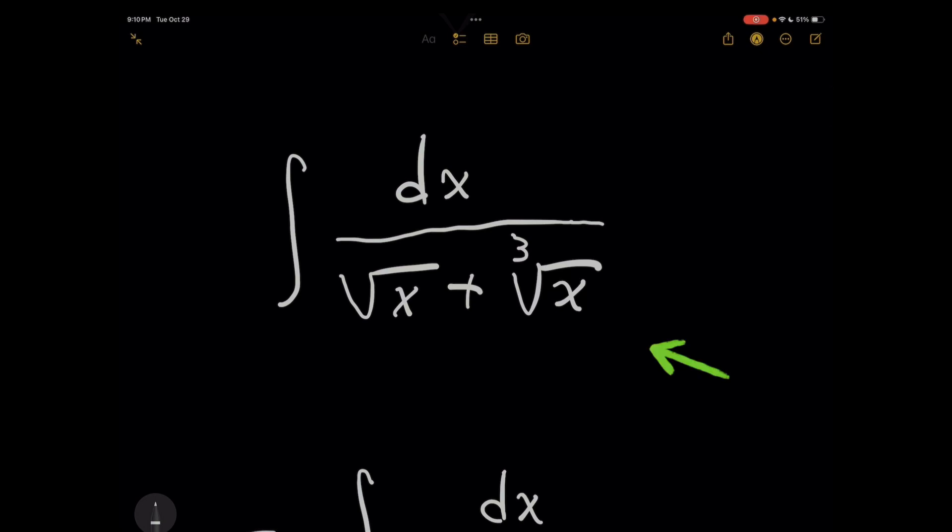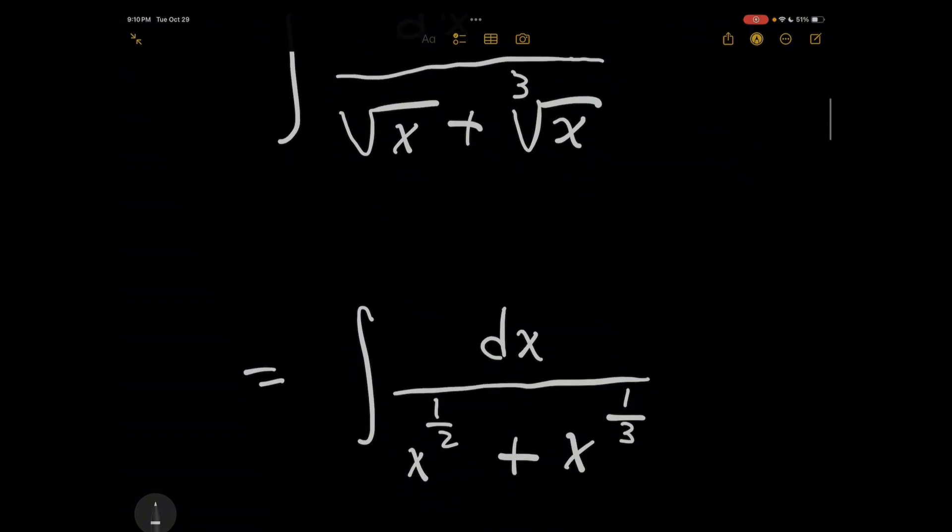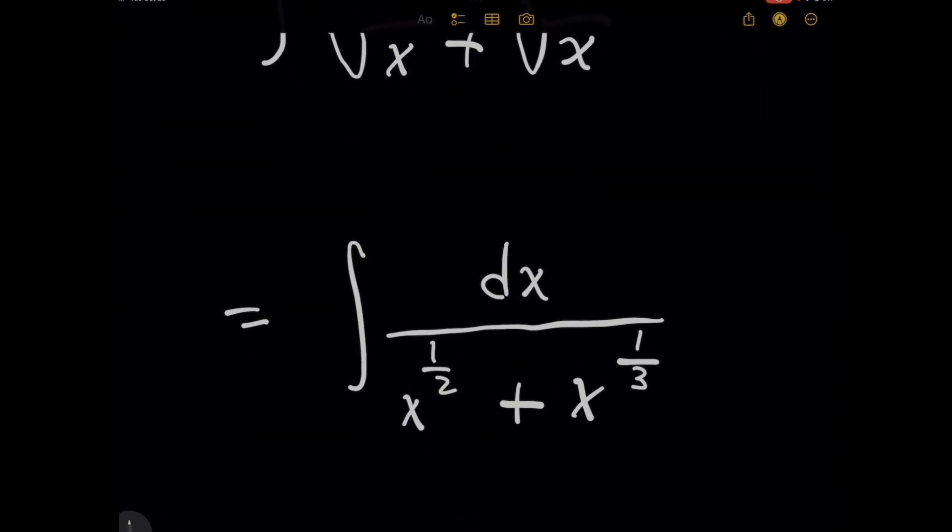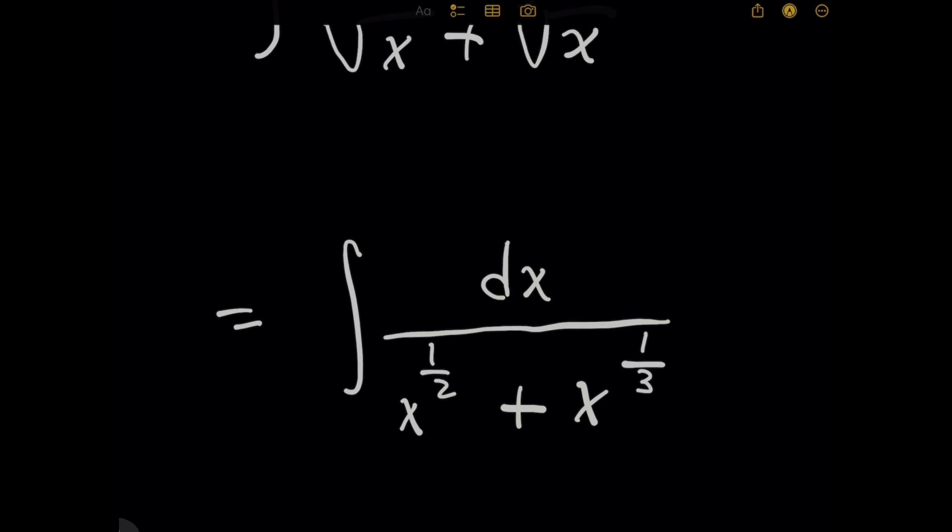For this problem here, notice that for radicals, it helps sometimes to rewrite the expression where you have fractional powers instead. Imagine this problem being given to you where you actually had powers that were whole numbers. The way we could transform this problem to look like that is realizing that 1/2 and 1/3 have a least common multiple of 6.